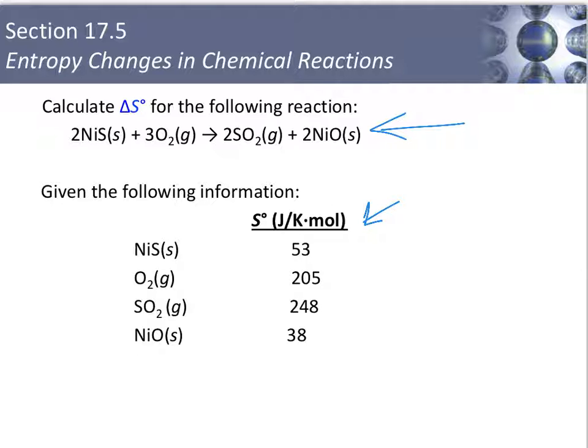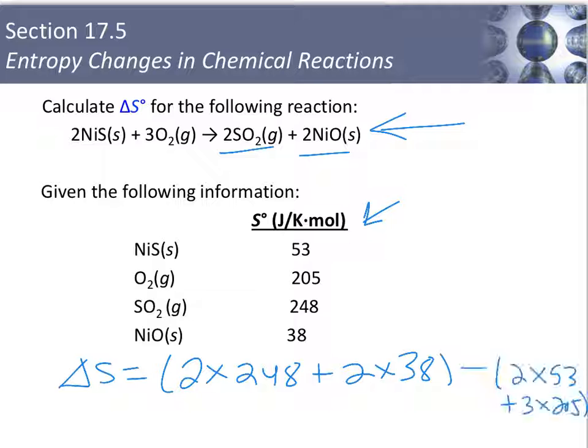We're going to do products minus reactants. For the products, 2 times 248 plus 2 times 38 will take care of our two products. Minus 2 times 53 plus 3 times 205. That takes care of our reactants. And our answer is negative 149 joules per Kelvin. The moles will cancel because we're multiplying by the moles, our coefficients, and our balanced chemical equation.